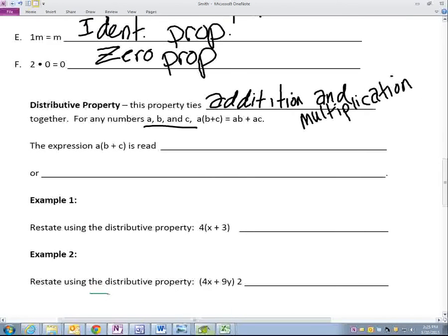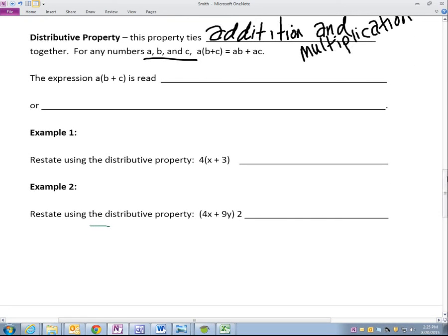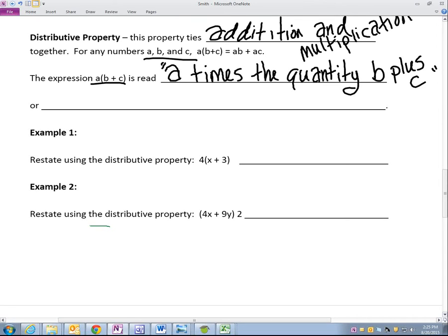Yes, you did learn this last year. All right. You did learn it last year, but a lot of you have those summer sand cobwebs. So the expression, and I want you to write this verbatim, word for word. The expression, this thing, is said like this. It's A times the quantity B plus C.